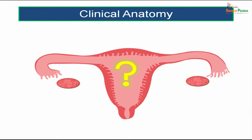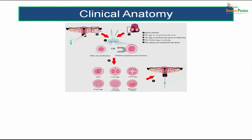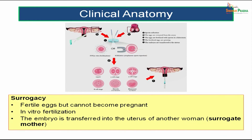Have you ever thought what will happen if there is no uterus? Sometimes, for some females, the uterus will be removed due to some pathological conditions. Can they become pregnant or can they give birth to their young ones? There is a special term known as surrogacy. What do you mean by surrogacy? You might have heard about surrogate mothers. In this condition, there can be fertilized eggs which are actually derived from the ovum from the mother who is not having a uterus.